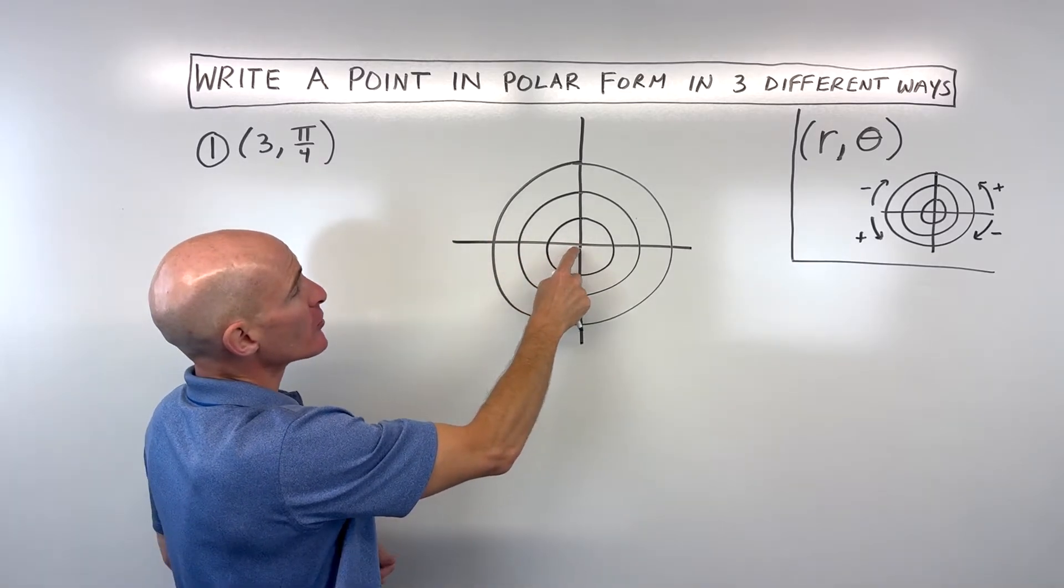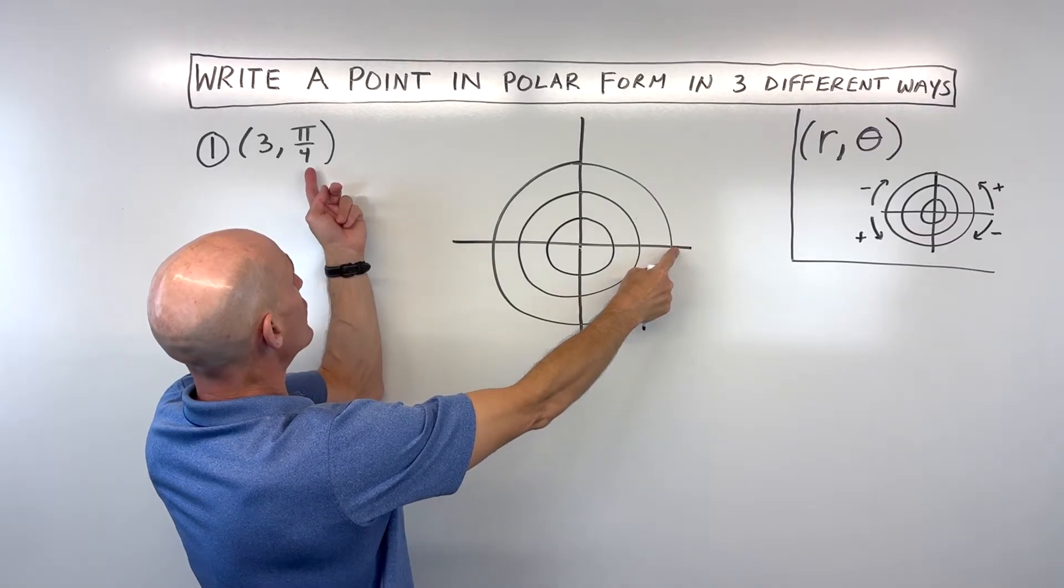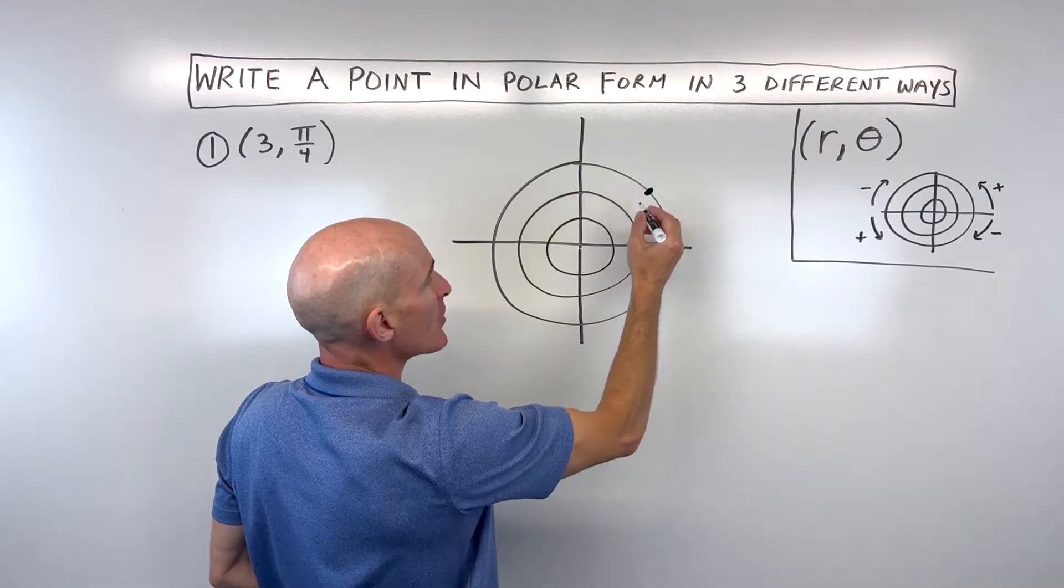We go out to a circle with radius three: one, two, three. Then we're going to rotate pi over four, which we know is a 45 degree angle. That's going to put us right here.